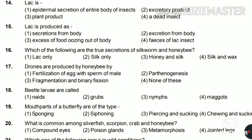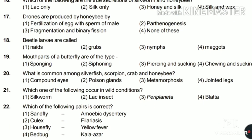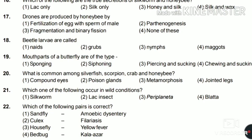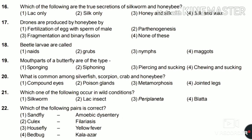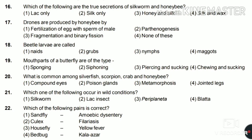Sixteenth: which of the following are the two secretions of silkworm and honey bee — lac only, silk only, honey and silk, or silk and wax? The answer is silk and wax. Silk is secreted by silkworm and wax is secreted by honey bee. Honey is regurgitated saliva mixed with flower nectar, but wax is the true secretion of the honey bee. Question nineteen: drones are produced by honey bee by fertilization, parthenogenesis, fragmentation, or binary fission? The answer is parthenogenesis.